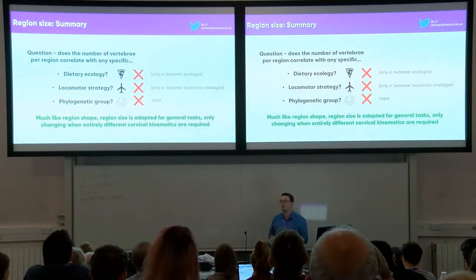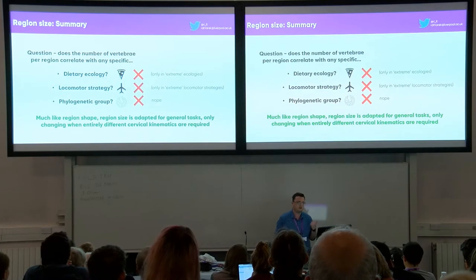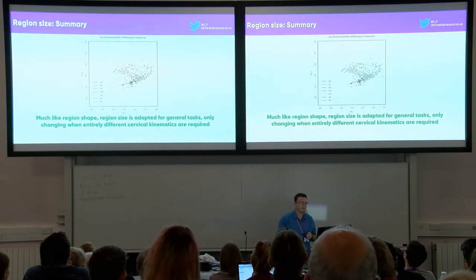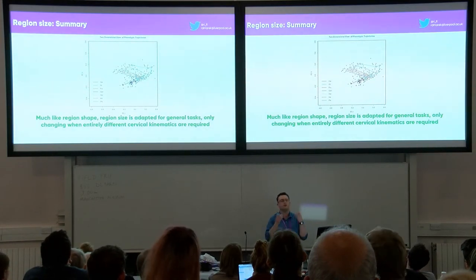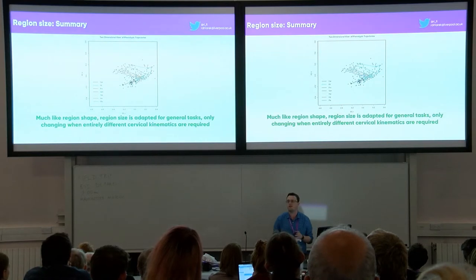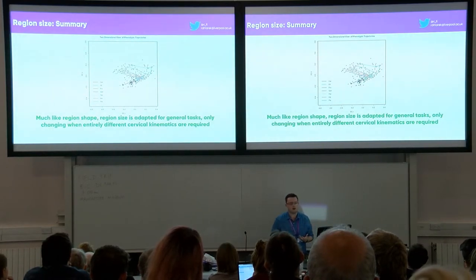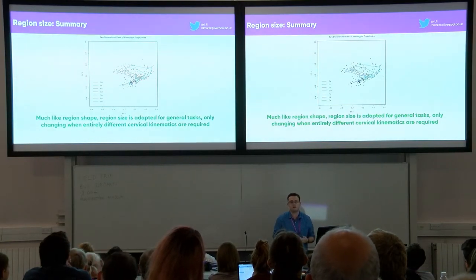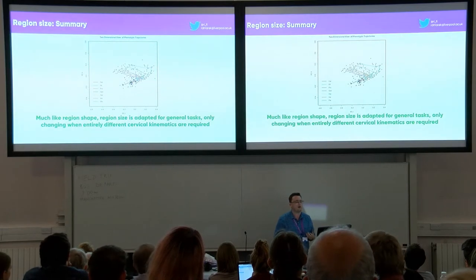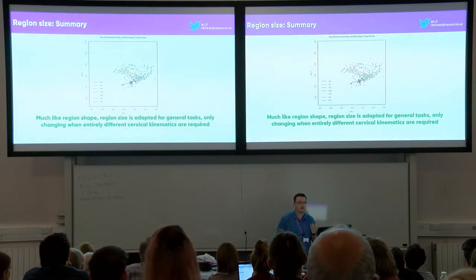We've seen this before with region shapes. Vertebral morphology shows exactly the same pattern: generally, birds have the same vertebral morphology across the entire column and it only adapts to extreme changes in cervical kinematics, such as carnivory - because you've got to have a lot of power within that neck to tear flesh from bone.